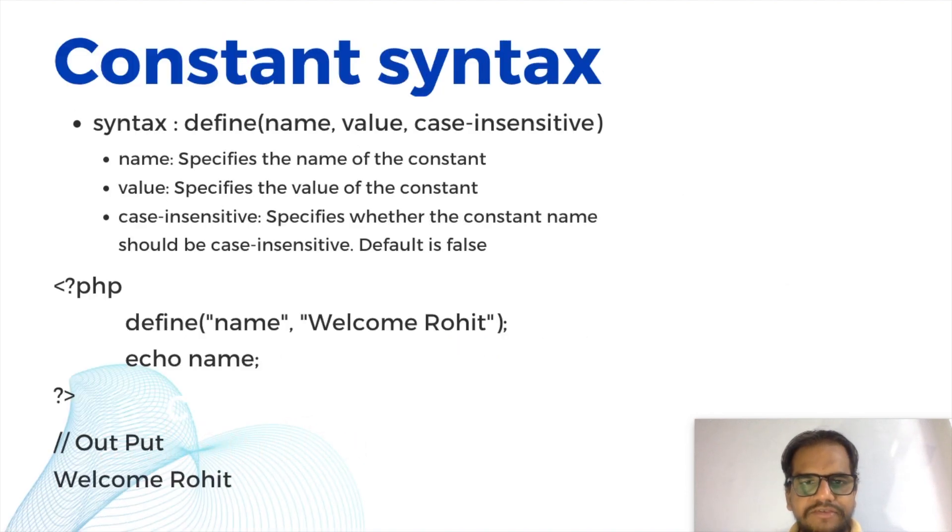Constant syntax. Constant syntax is define name, value, case-insensitive. This is the three types of arguments we need to pass in a constant. Third one is not necessary. By default they are chasing the false. First is name and second is value.